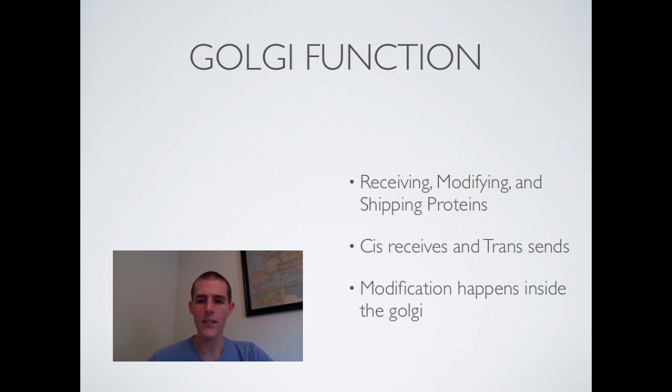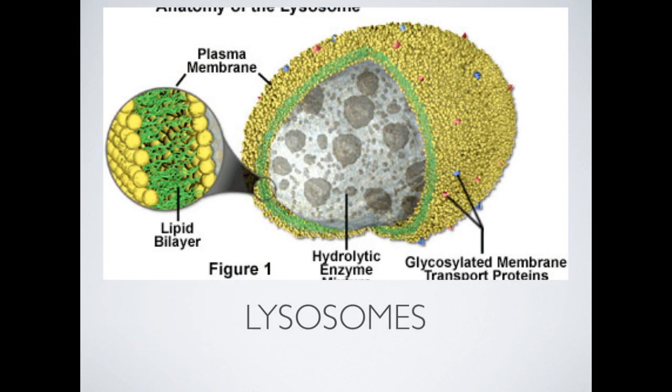Whenever the Golgi is done modifying it, it will send it out of the trans face in another little vesicle that's going to bud off and take that protein to wherever it needs to be. Now I kind of think of it as almost like a corrupt FedEx because it receives your package, it opens it up, messes around with what's inside, and then packages it back up and sends it away. That's what the Golgi does. It gets a protein, it opens up that vesicle, it messes with the protein that's inside, then it packages it back out and sends it off to where it's supposed to be, hopefully in a working format.